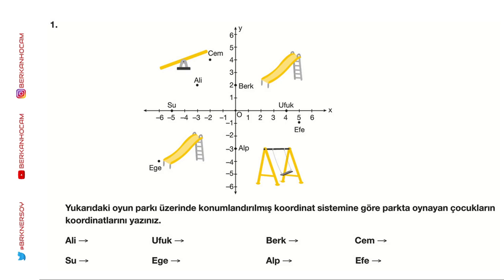Yukarıda bir koordinat sistemi verilmiş, noktaların koordinatlarını bulmamızı istiyor. Ali'nin karşılık geldiği nokta: x'i 3, y'i 2, yani (3,2). Su sadece x ekseninde, y koordinatı 0 olduğundan (5,0). Berk'in x koordinatı yok, (0,2). Ufuk (4,0). F noktasının x'i 5, y'si eksi 1 olduğundan (5,-1). Alp (0,3). Ege'nin x'i eksi 6, y'si eksi 4, yani (-6,-4). Cem (-2,4).